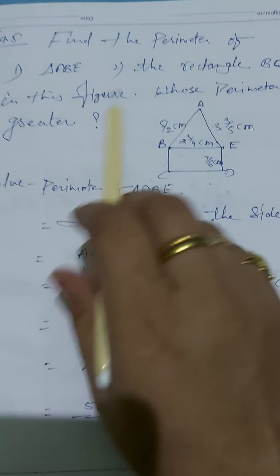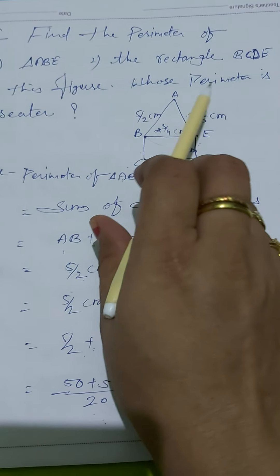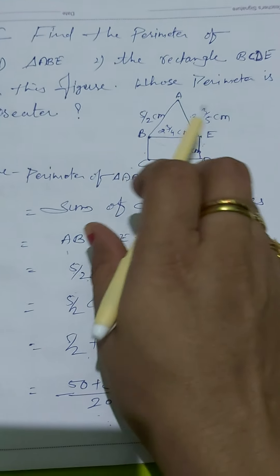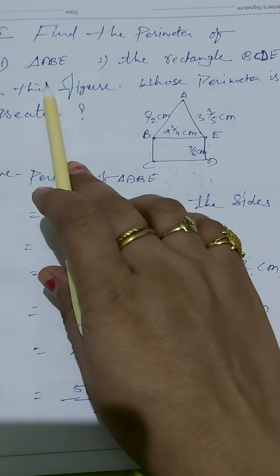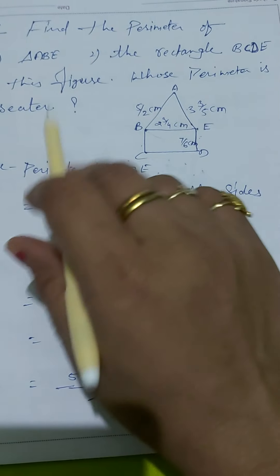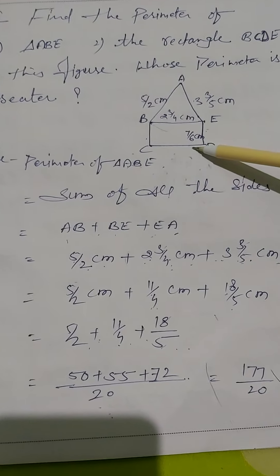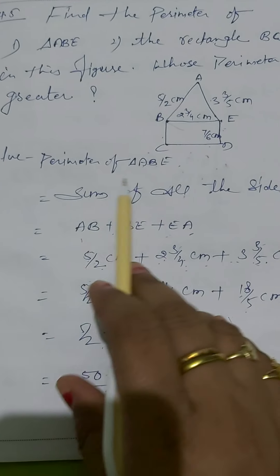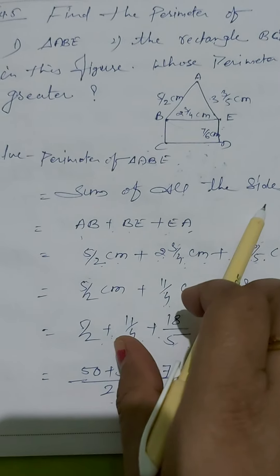Now we will see question number 5. We have to find the perimeter of triangle ABE and the rectangle BCDE, then determine which perimeter is greater. We are given a figure containing both a triangle and a rectangle.